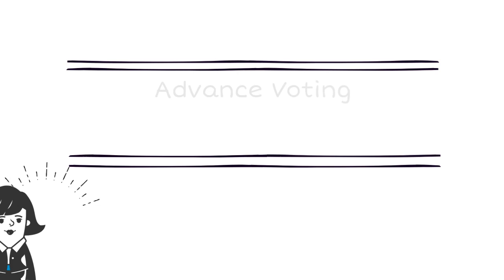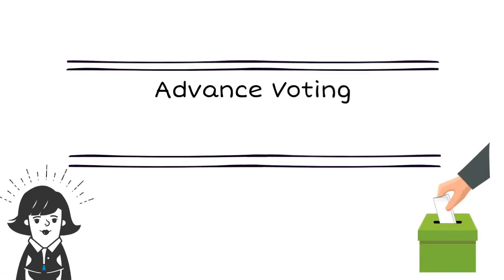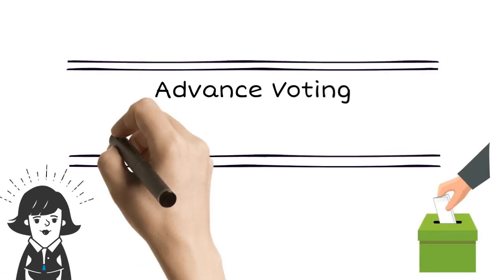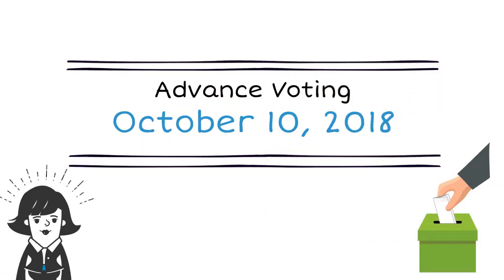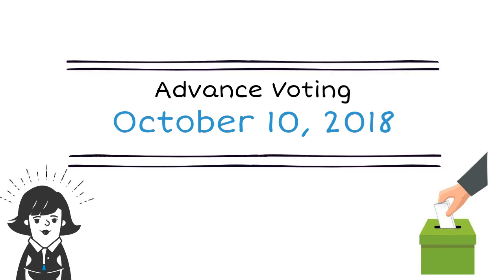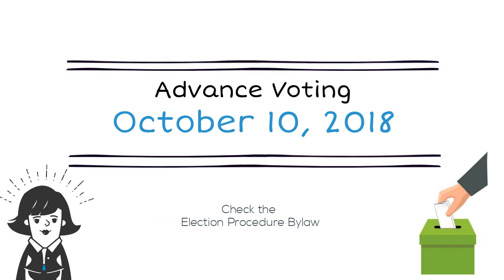All local governments will hold advanced voting on Wednesday, October 10. Local governments with populations greater than 5,000 are required to hold at least two advanced voting opportunities. Check your local government's election procedure bylaw for details on advanced voting opportunities, and your local government will also publish details about advanced voting.